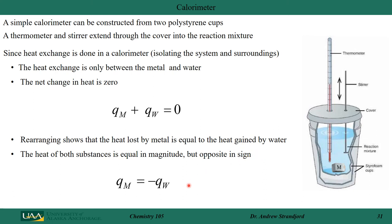Rearranging, q_metal = −q_water. The metal loses heat, so q_metal must be a negative value; the water gains heat, so it must be a positive value. They have to have opposite signs. We'll talk about heat loss, heat gain, and negative and positive values in more examples as we move through the chapter.